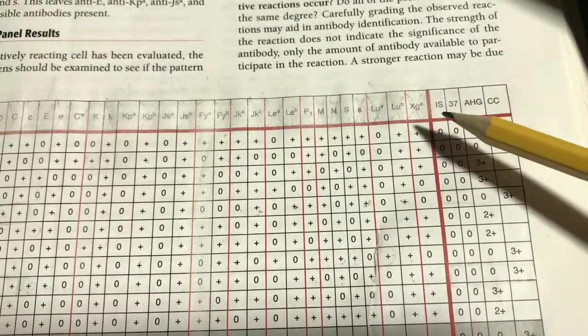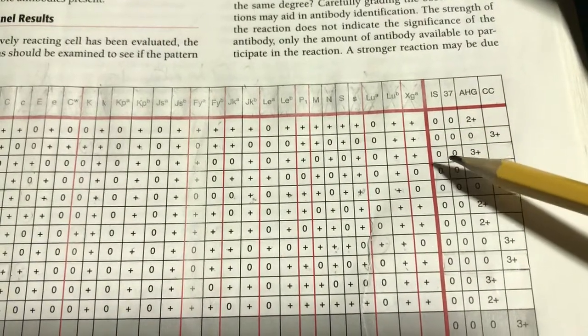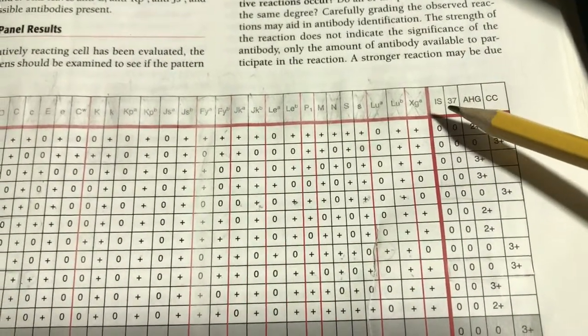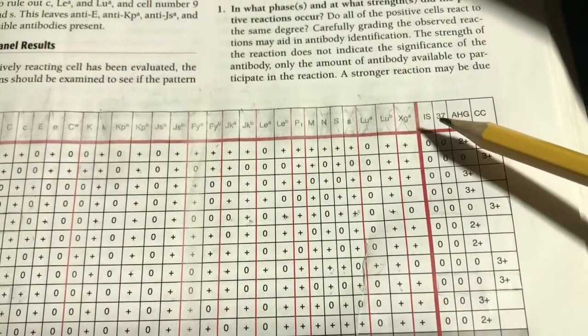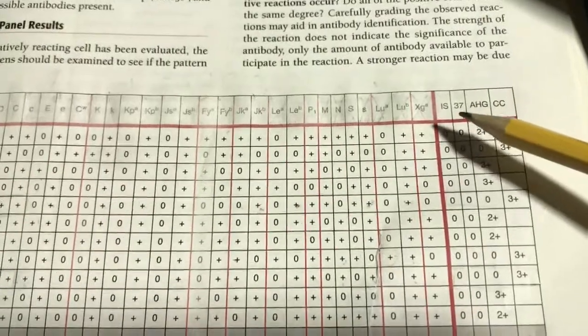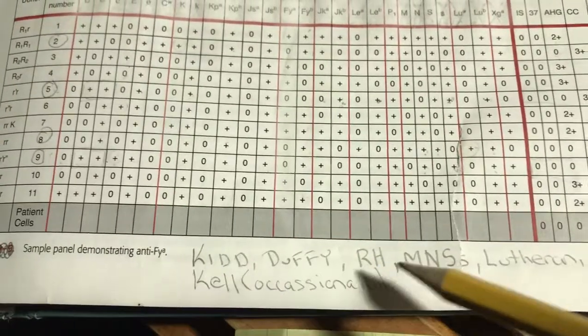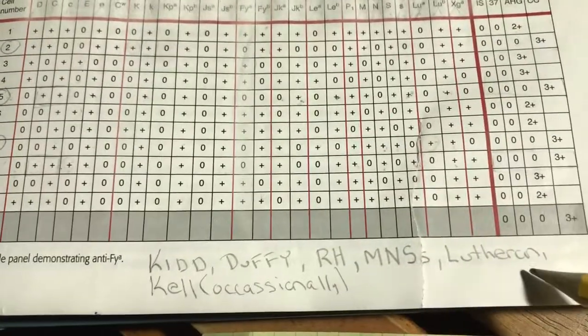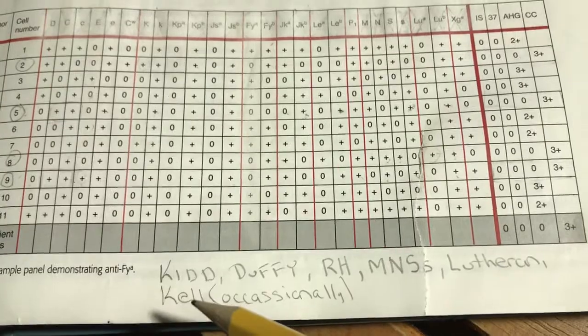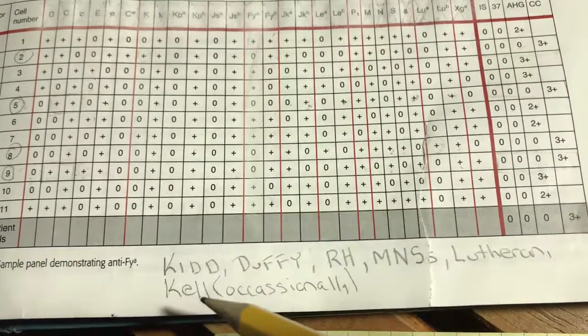This is immediate spin testing, which is room temperature, 37 degrees, AHG, check cells. Check cells are only checking that the AHG was actually negative. We run it to confirm a negative AHG.